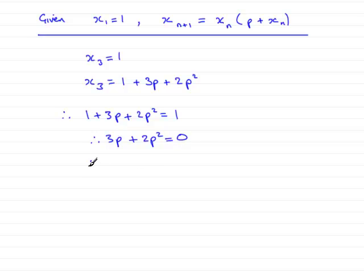And if I factorize this, we can pull out p as a common factor. So we have p times 3 plus 2p equals 0.